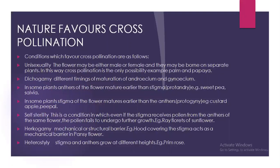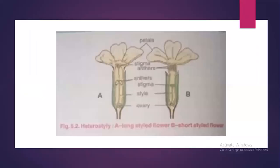Heterostyly: when stigma and anthers grow at different heights. For example, primrose. In this diagram you can see heterostyly shown with the male and female parts at different heights.